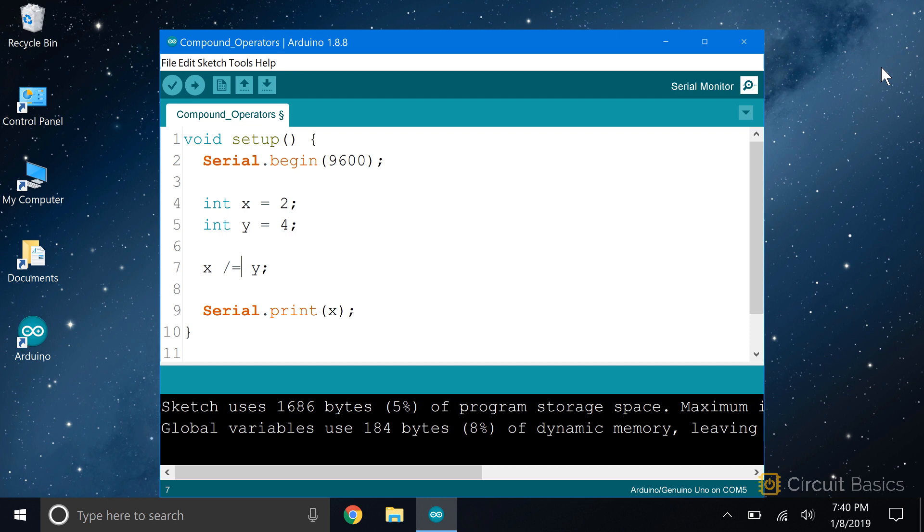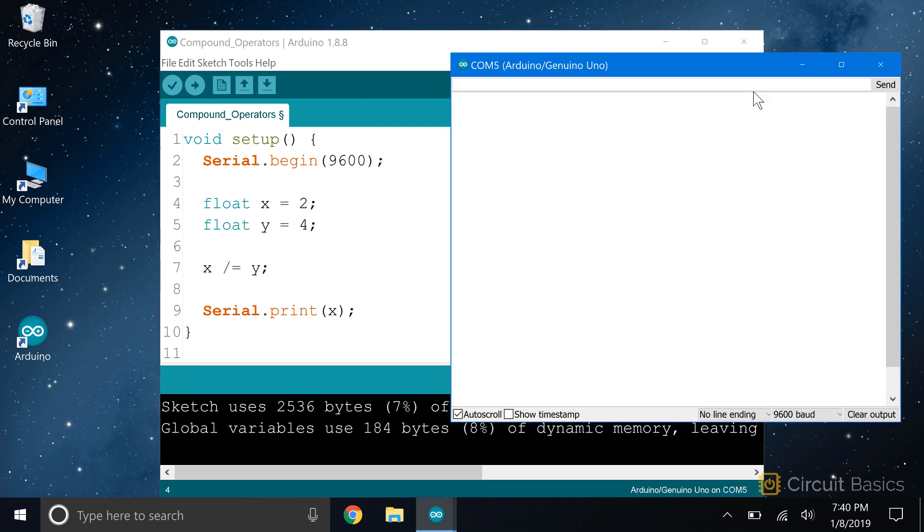But wait, 0.5 is not an integer. It's a floating point value. So I'm going to need to change these variables to floats. Let's see what we get. And there we go, 0.5.